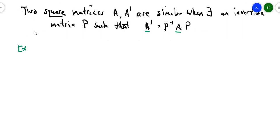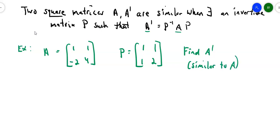Let's take a look at this example. Suppose matrix A is the matrix (1, 1, -2, 4), and matrix P is the matrix (1, 1, 1, 2). Find A', which is a matrix similar to matrix A. The first thing is it says they're similar when an invertible matrix P exists. Does P inverse exist? Let's find out. Take the determinant of P: 1 times 2 is 2, minus 1 times 1 is 1. The determinant is 1. Meaning that P inverse, all I have to do is switch and negate.